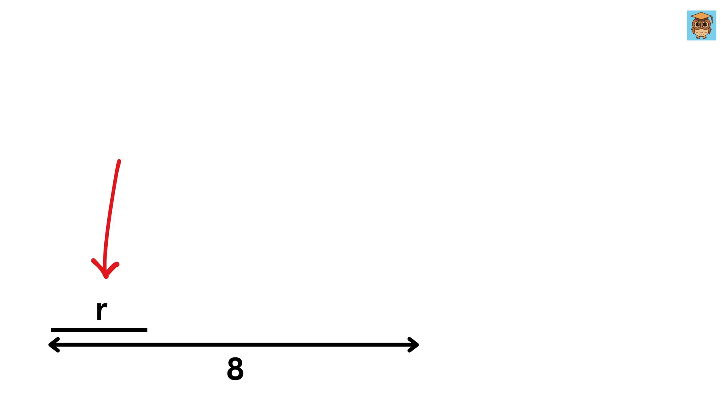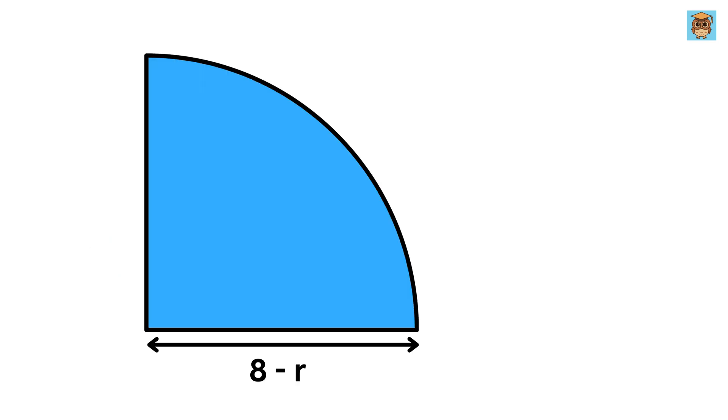Now, if this is r and this is 8, then this will be of length 8 minus r. This means the radius of this quarter circle is 8 minus r. Sweet!